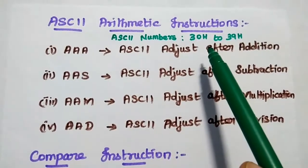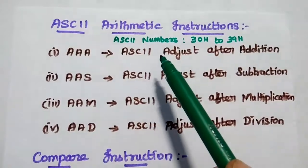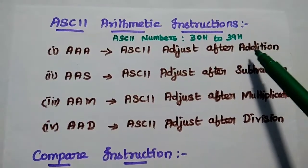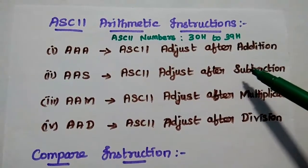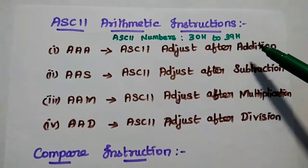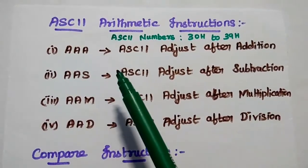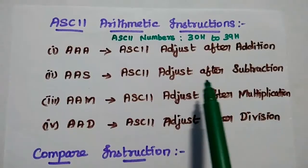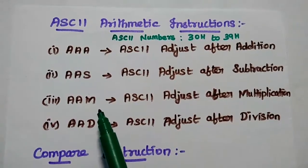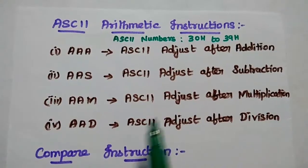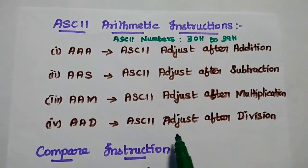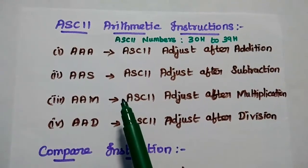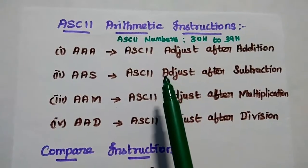ASCII Arithmetic Instructions: ASCII numbers can be represented from 30H to 39H for the numbers 0 to 9. We use separate instructions for ASCII Arithmetic: AAA — ASCII Adjust After Addition; AAS — ASCII Adjust After Subtraction; AAM — ASCII Adjust After Multiplication; and AAD — ASCII Adjust After Division. By using these instructions, we can ensure that the given result is in legal ASCII numbers.